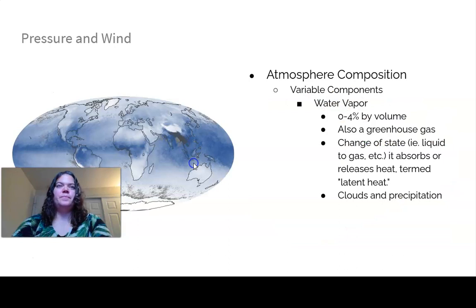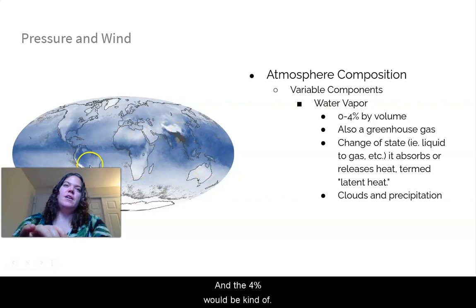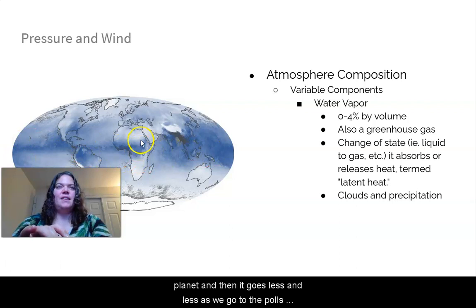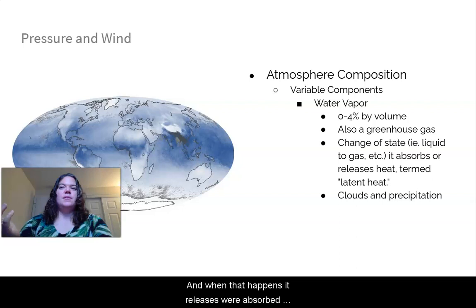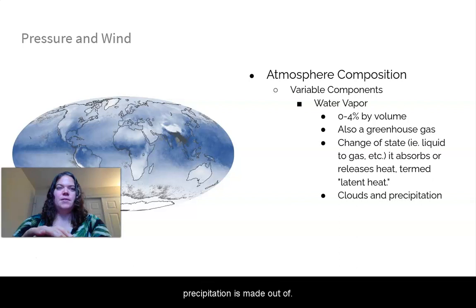Another greenhouse gas that kind of surprises people is water vapor. So it's 0% to 4% by volume. The 4% would be centered around the equator, and then it goes less and less as we go to the poles. It's also a greenhouse gas. It changes state at normal temperatures and pressures, and when that happens, it releases or absorbs something called latent heat. And this is what our clouds of precipitation is made out of.